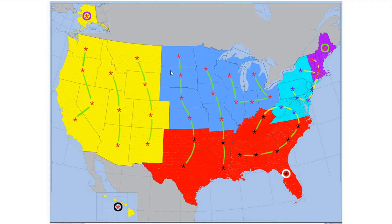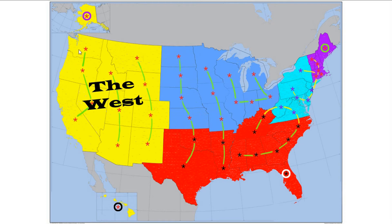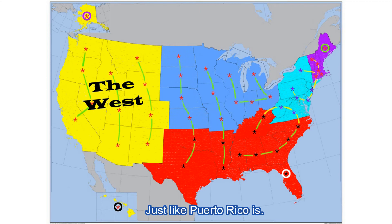Now you may wonder why the states are colored the way they are — that's because this is the traditional or official division of America into regions, as dictated by official sources beginning with the Census Bureau. According to them, the yellow here is the West. Alaska and Hawaii are also counted in the West, which kind of makes sense as they are in the Western Hemisphere, but to my mind they are so remote that they should be counted as something separate — like a Commonwealth of the United States. But I guess 50 looks and sounds better.